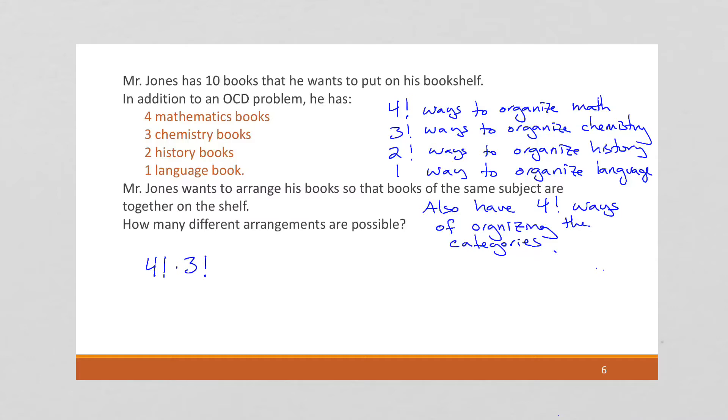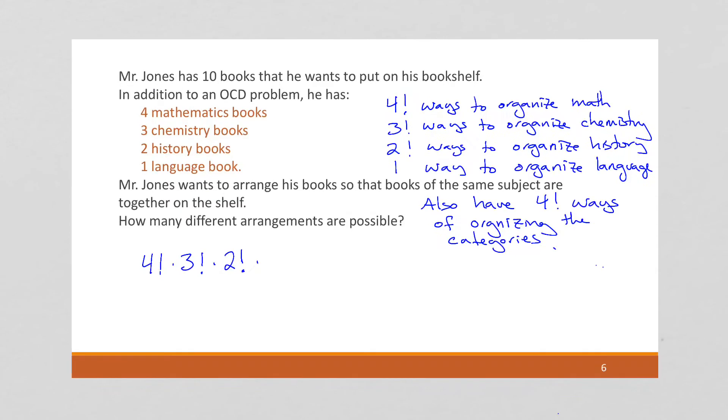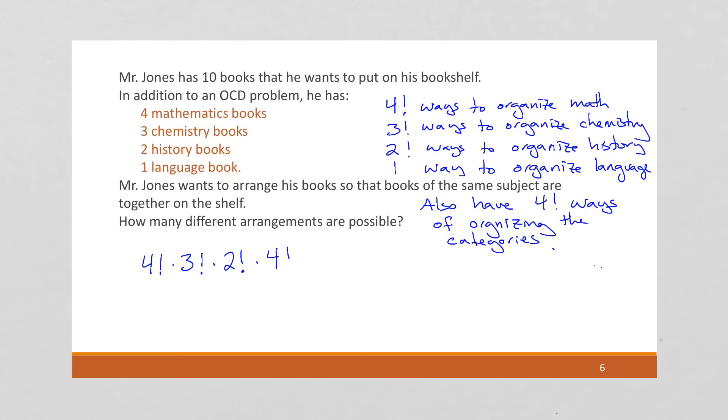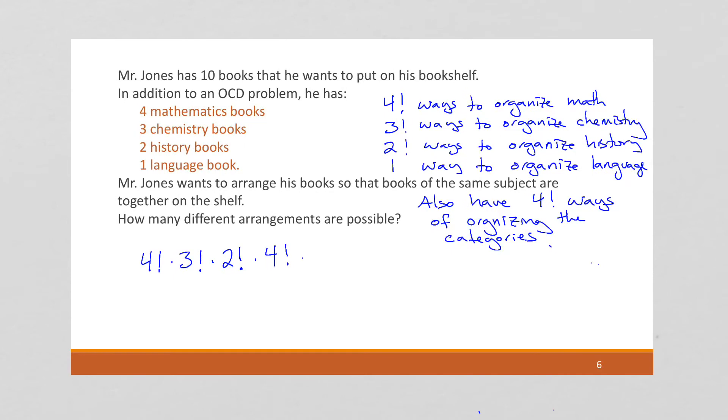Because the way I organize my math books tells me nothing about how I should organize chemistry. The two types are independent of one another. That's 2!. I'm going to leave the one out. But we also have the 4! ways of organizing the categories. And if you were to work all this out, you would get that this is 6,912 possible ways to organize the books using his organizational strategy.